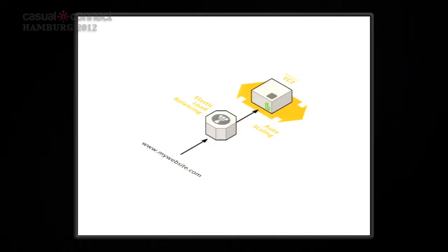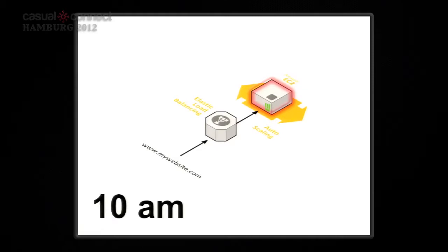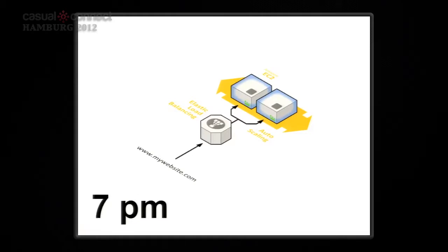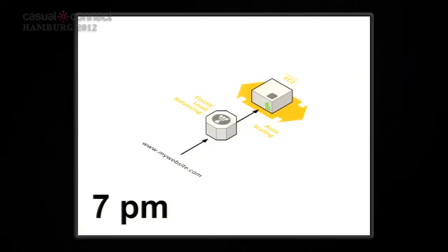Here's how it works: at 6 a.m. you don't have many players — one machine is fine. At 10 a.m. players arrive, CloudWatch detects the CPU is burning, and triggers creation of a new machine. Once the machine is initialized the load balancer starts distributing traffic to it. At 10 p.m. players leave, CPU and bandwidth usage drop below 20%, Auto Scaling triggers removal of a machine, and the load balancer stops sending traffic to it — you're back to the initial state.